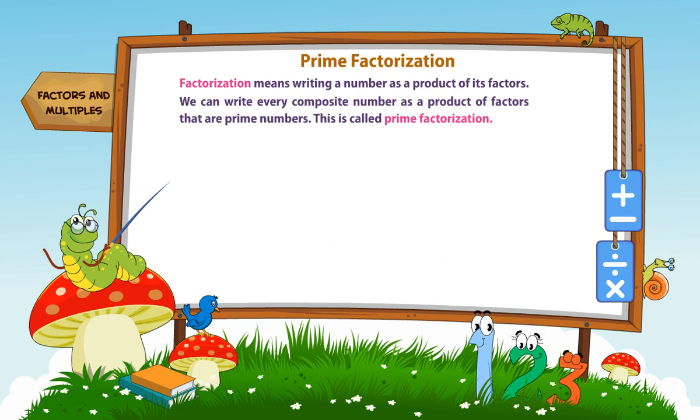Prime factors can be obtained by two methods. 1. Factor Tree Method. 2. Division Method. Let's learn these methods to find prime factors of a number.